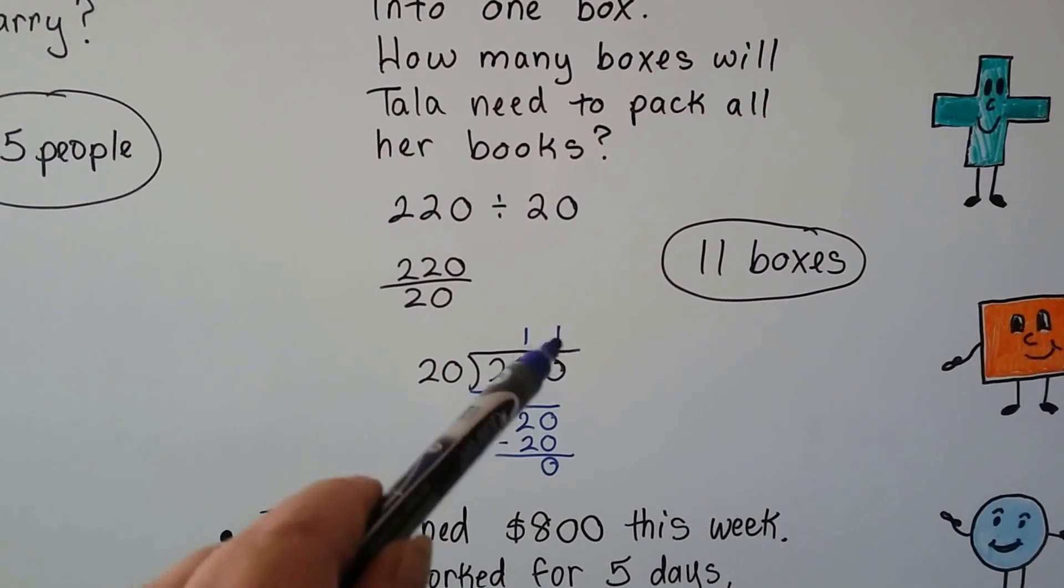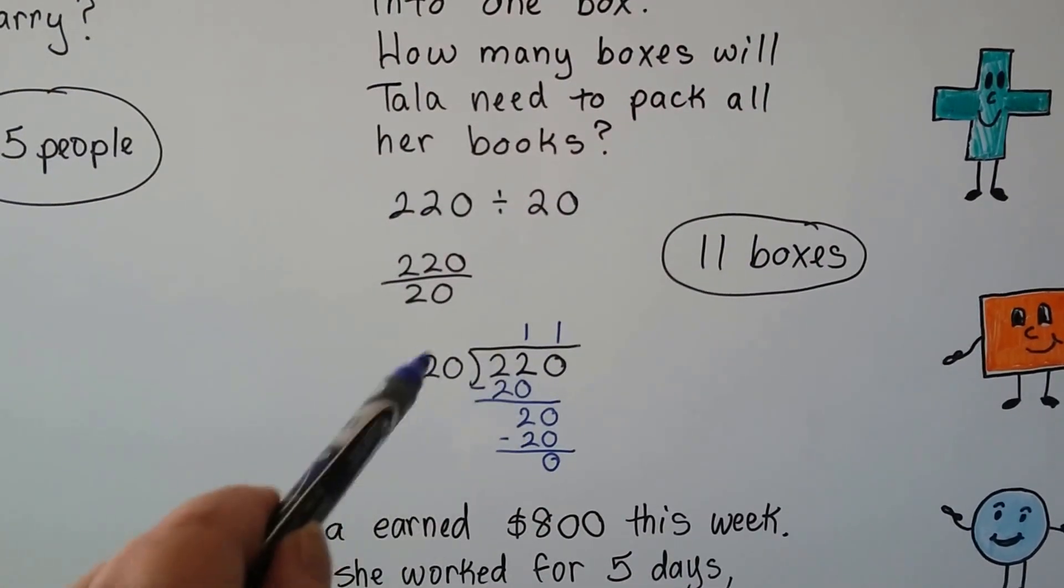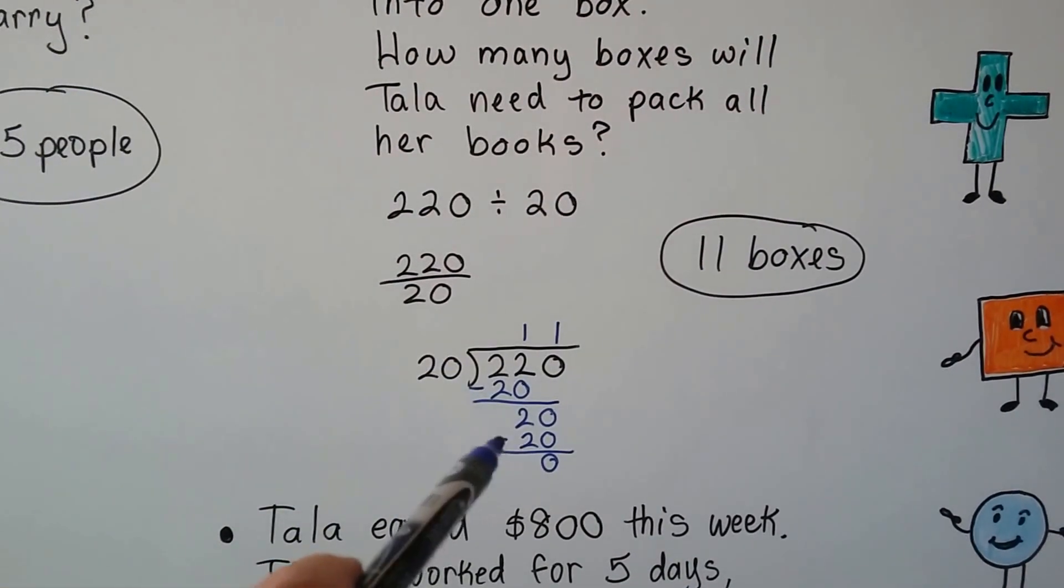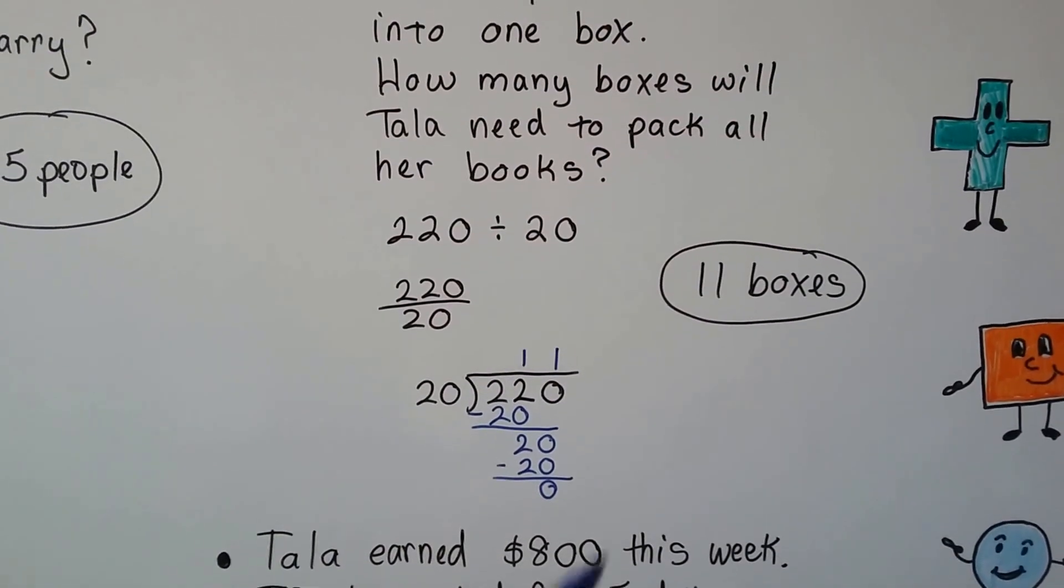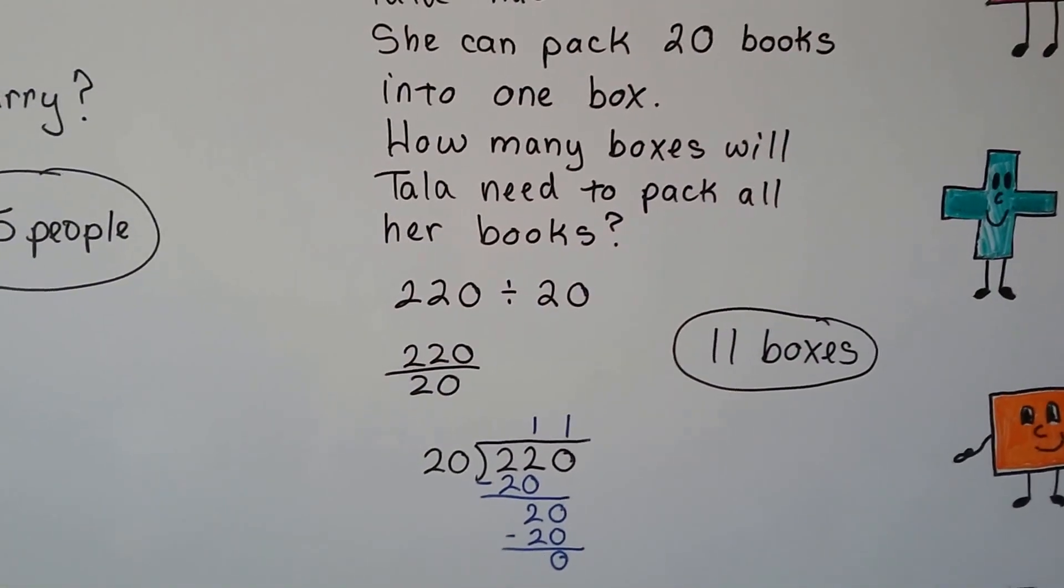20 goes into 20 one time. We multiply it. We write 1 times 20 is 20 here and subtract and get a 0 remainder. So we know she'll need 11 boxes to pack her books.